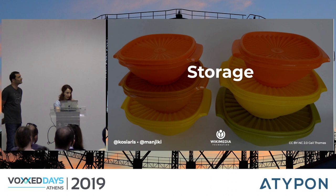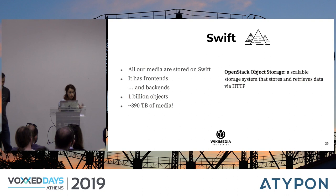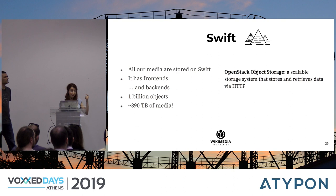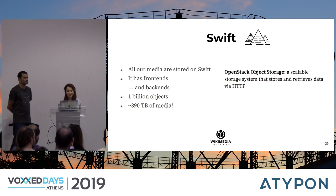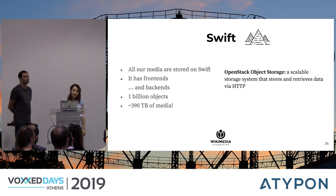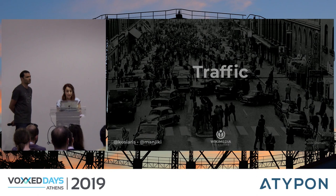I'll briefly talk about storage. We use OpenStack Swift, an object storage that is scalable. Its two key features are that it talks HTTP, and that it scales just by adding more servers, taking care of indexing and replication automatically. It has frontends — servers that serve HTTP requests — and backends that do the actual storing and retrieving of media. We store about one billion objects, adding up to about 390 terabytes.